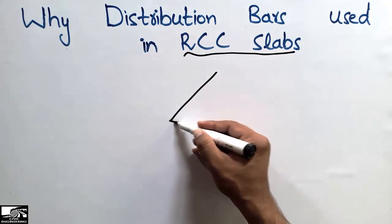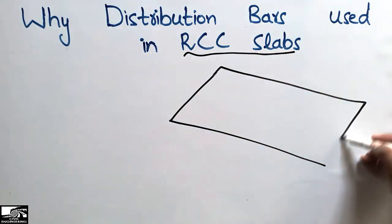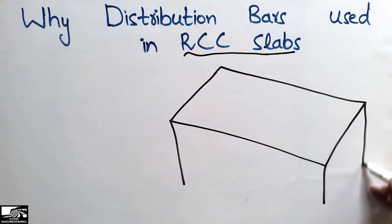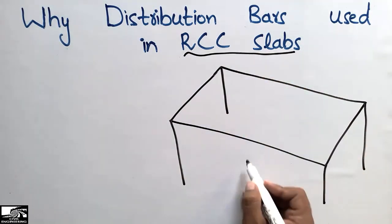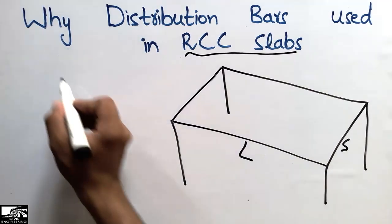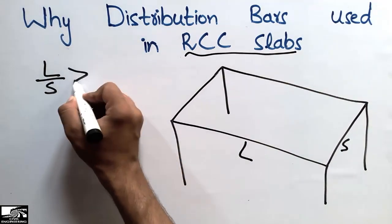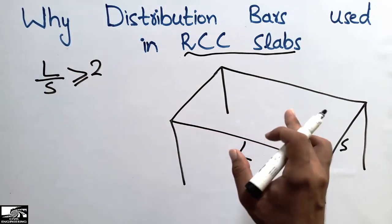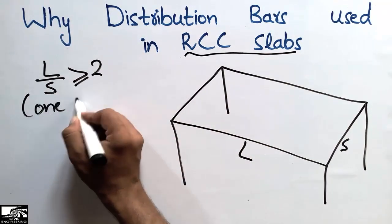For example, consider this one-way slab supported by columns on two sides — one is the longer side and one is the shorter side. When the longer to shorter side ratio is greater than or equal to 2, we call this type of slab a one-way slab.